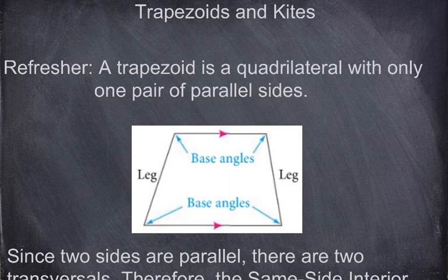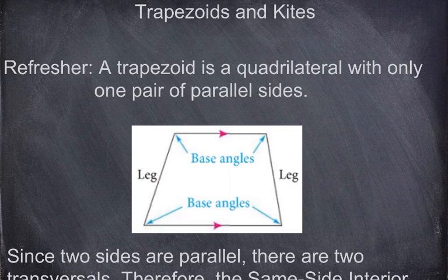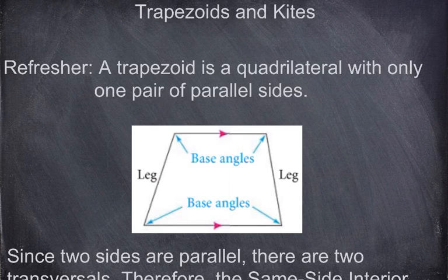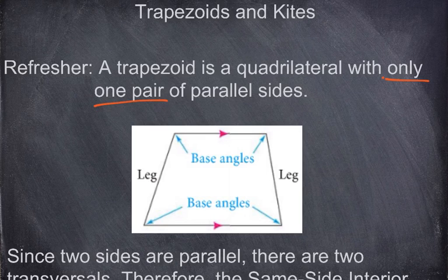Hello Geometry. This lesson is entitled Trapezoids and Kites. Let's start with a refresher: what is a trapezoid? A trapezoid is a quadrilateral with only — keyword — only one pair of parallel sides.